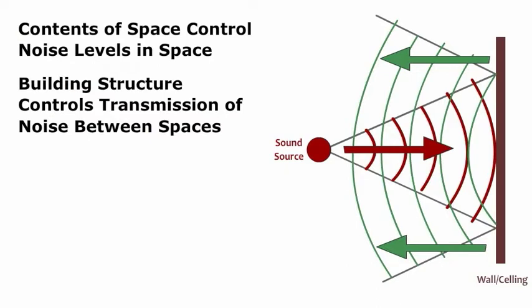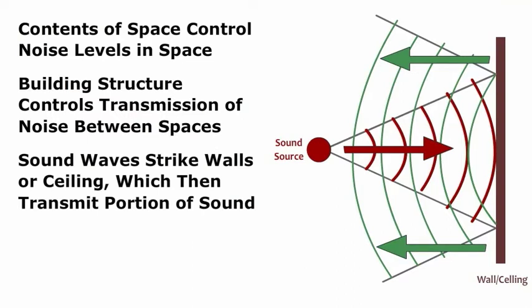In a normally constructed room without acoustical treatment, sound waves strike walls or the ceiling, which then transmit a small portion of the sound. The walls or ceiling absorb another small amount, while most of the sound is reflected back into the room.